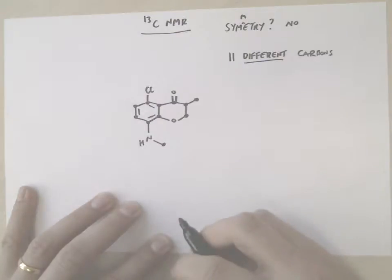So you'd see eleven peaks or eleven signals in your carbon NMR spectrum for this molecule. If you didn't see eleven, then that would mean you didn't have this compound. If you saw more than eleven, you may have this compound plus impurities. If you saw less than eleven, it would mean you didn't have this molecule in there at all.